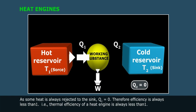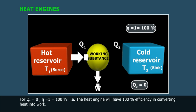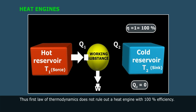That is, thermal efficiency of a heat engine is always less than 1. For Q2 equal to zero, eta is equal to 1, equal to 100%. That is, the heat engine will have 100% efficiency in converting heat into work. Thus, first law of thermodynamics does not rule out a heat engine with 100% efficiency.